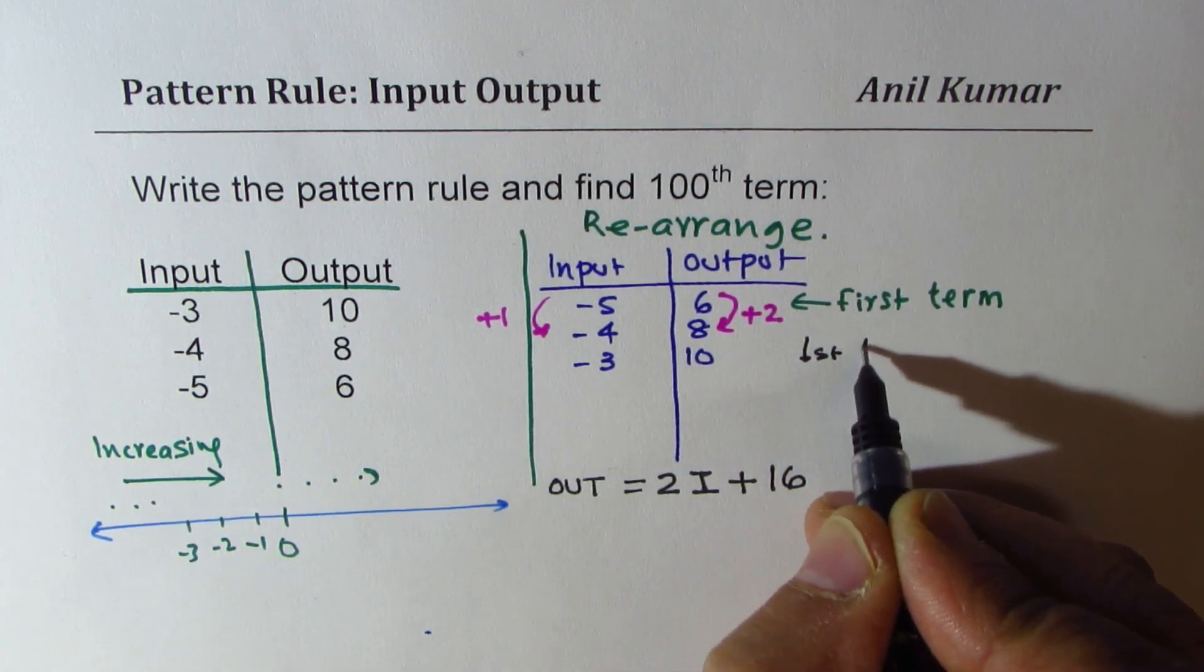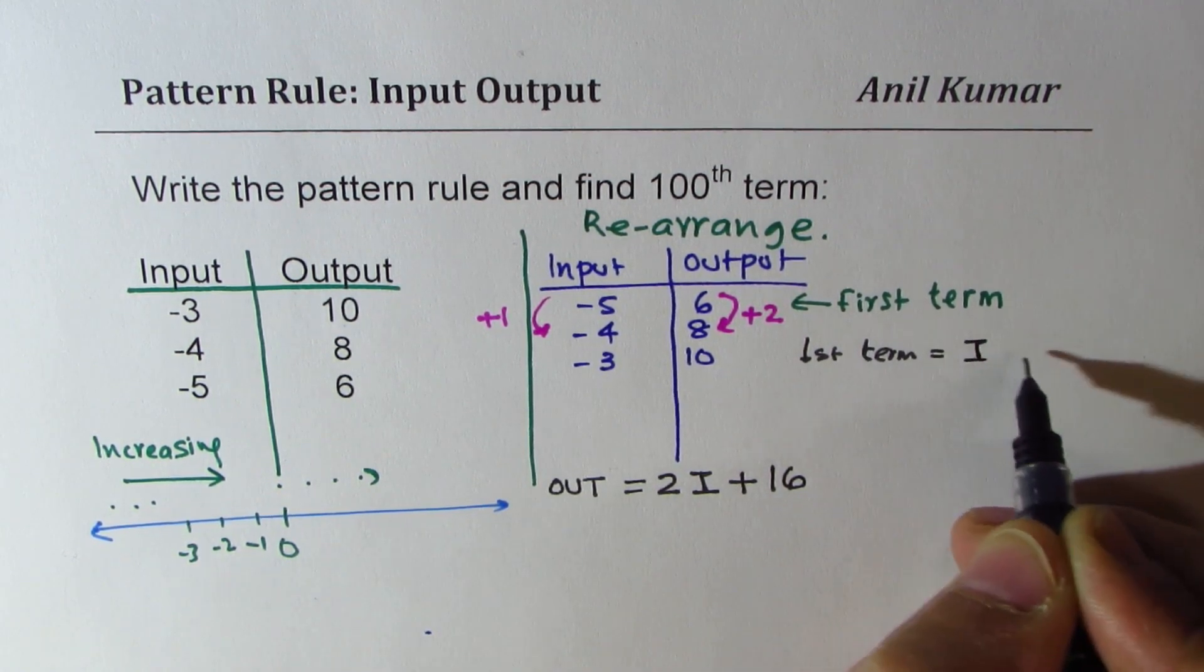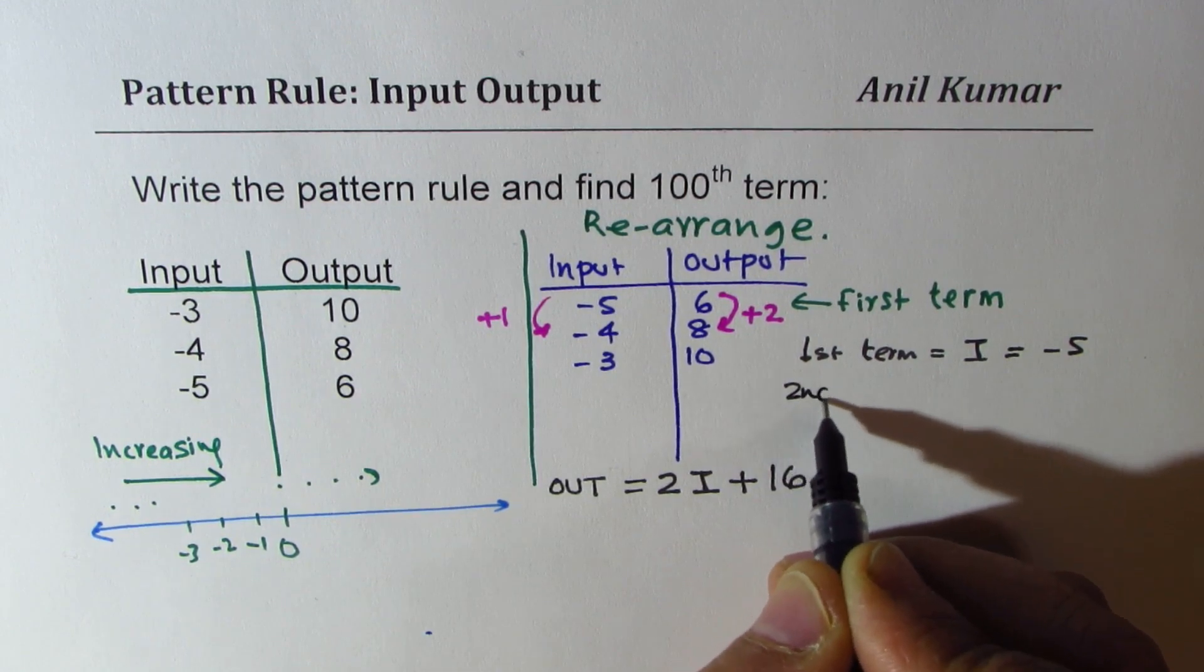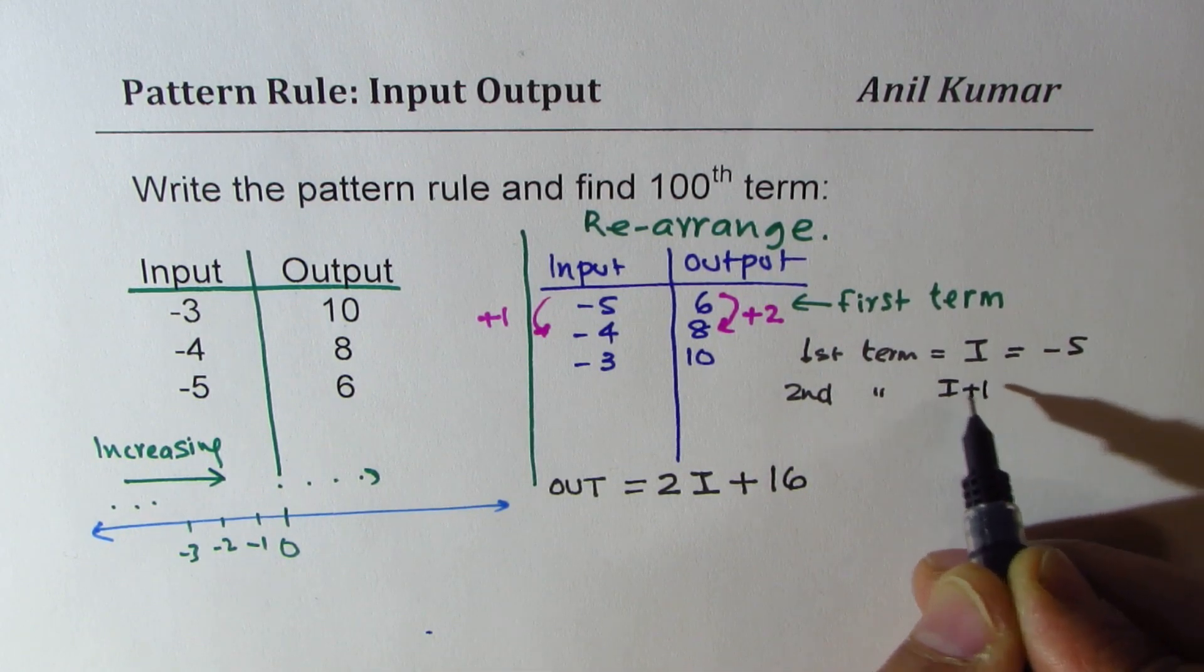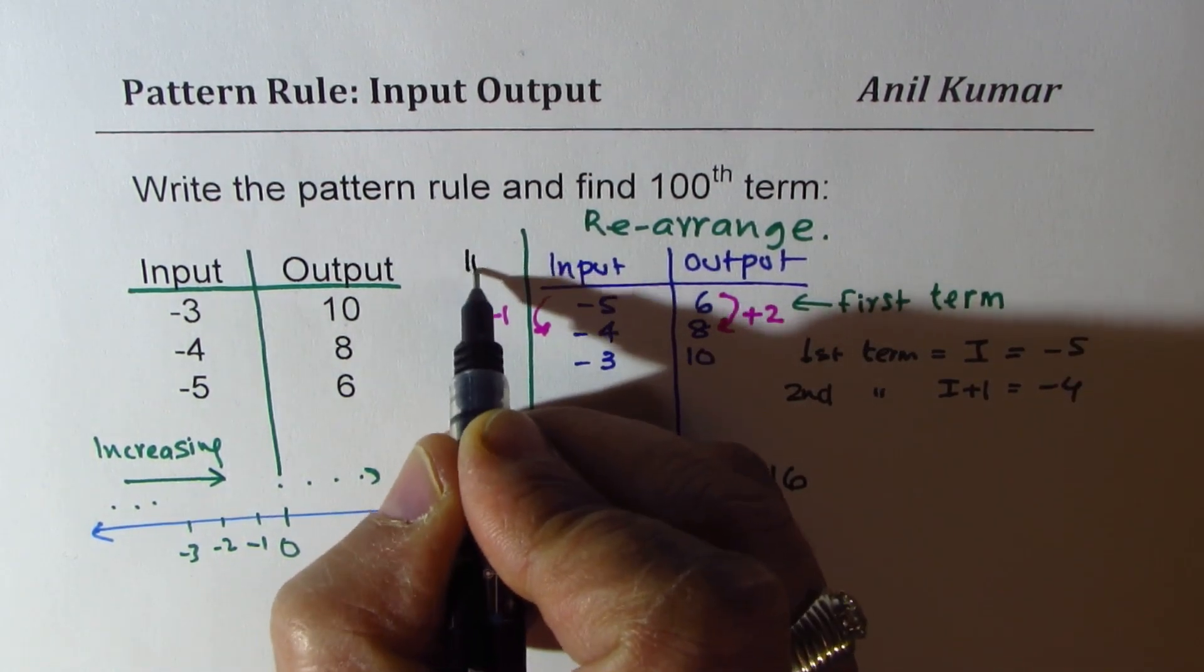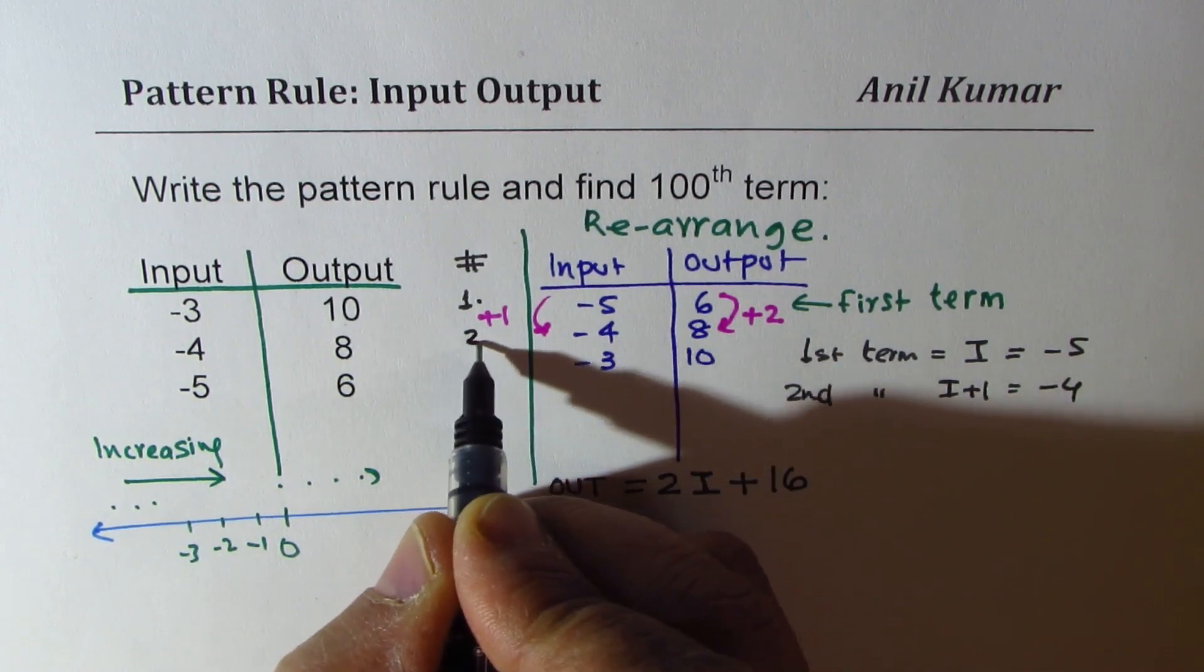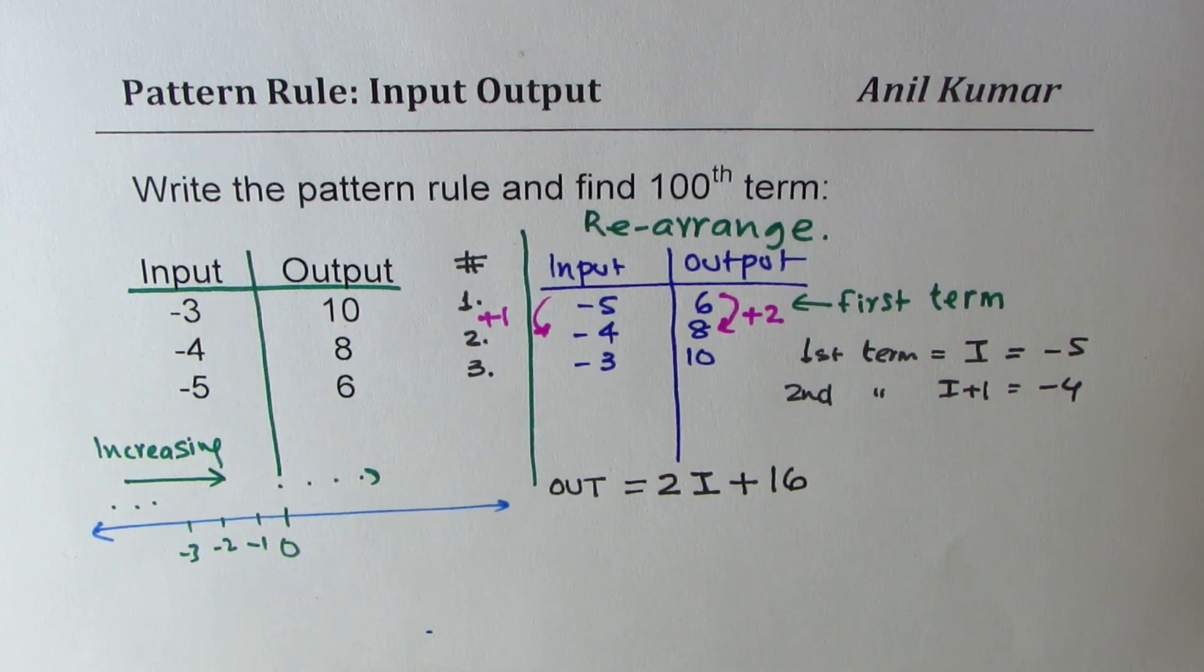So the first term, I input is I input equal to minus five. So second term input will be I plus one, so it will be minus four. You can see this is the second term. So let's write term numbers here. So term number one, term number two, and then we have term number three.